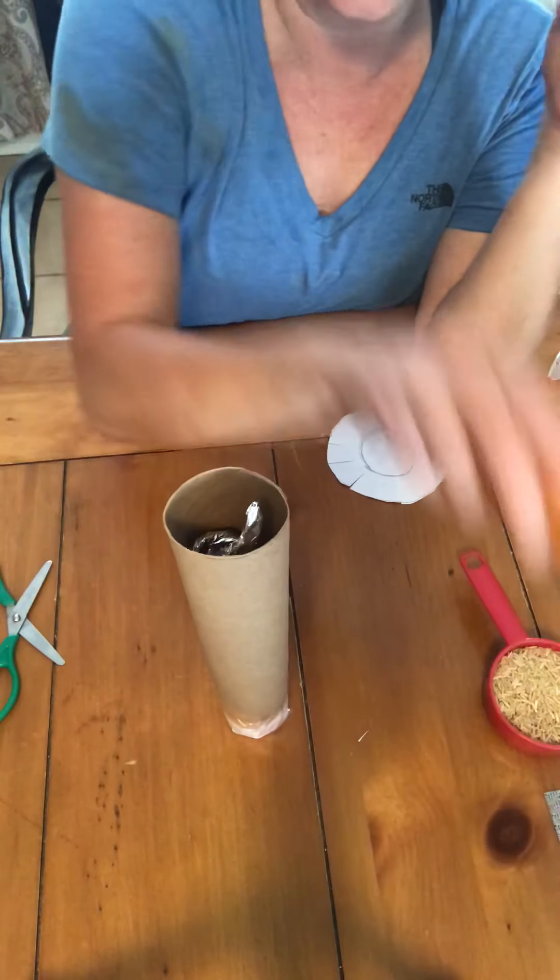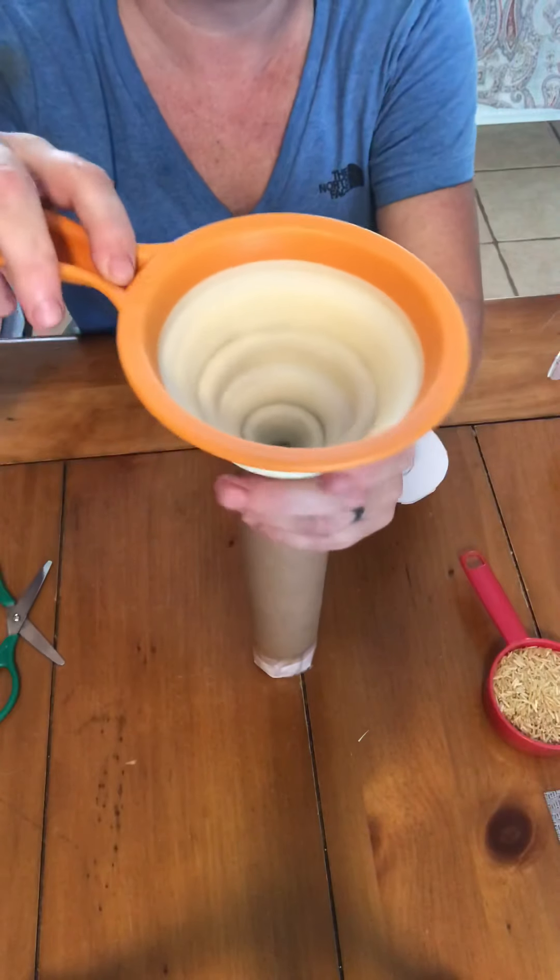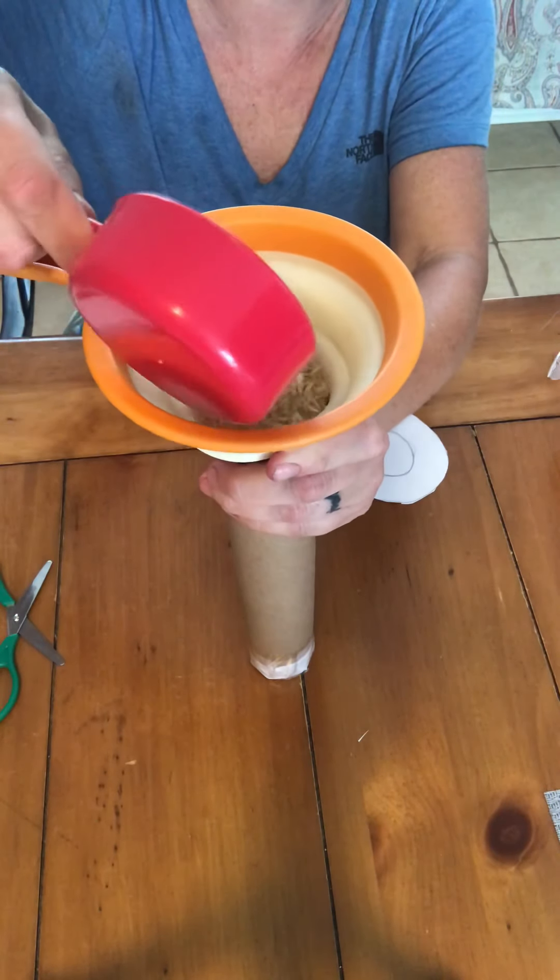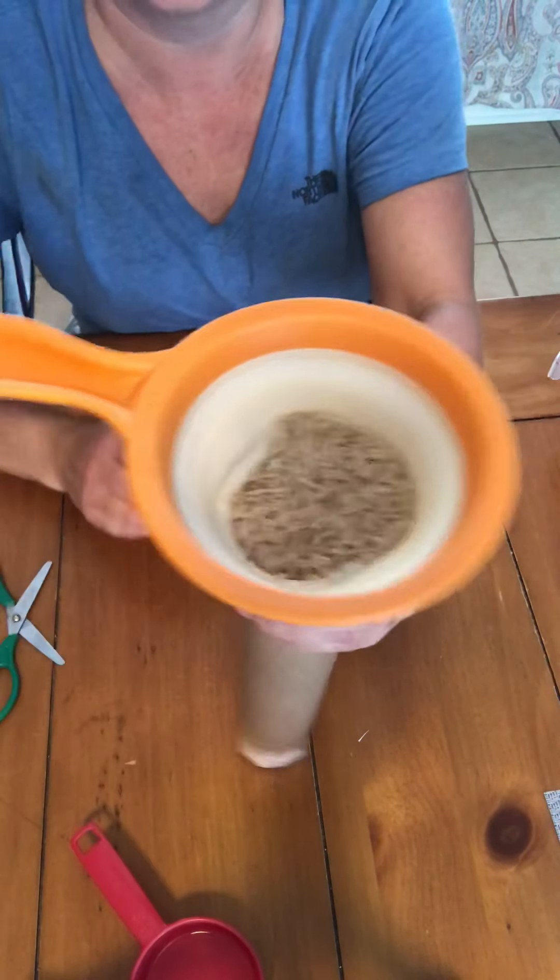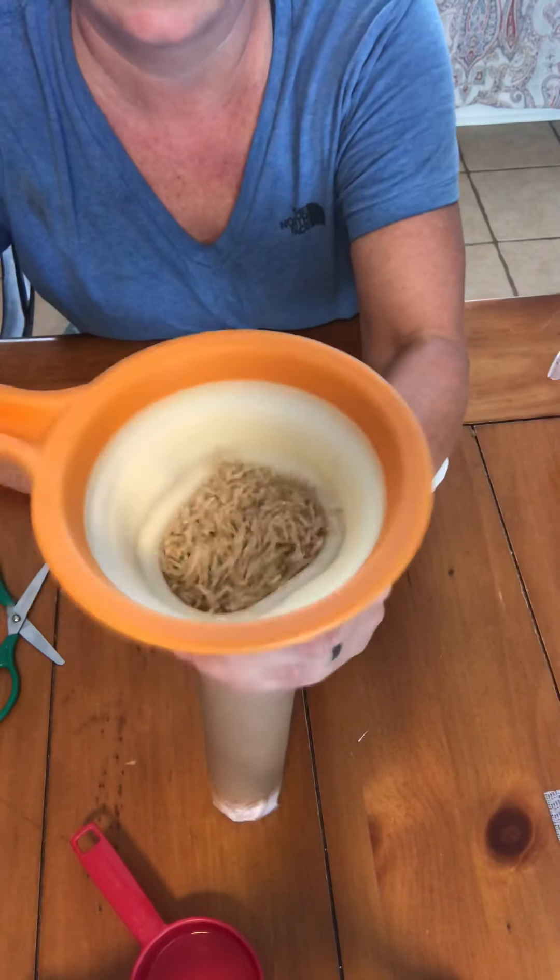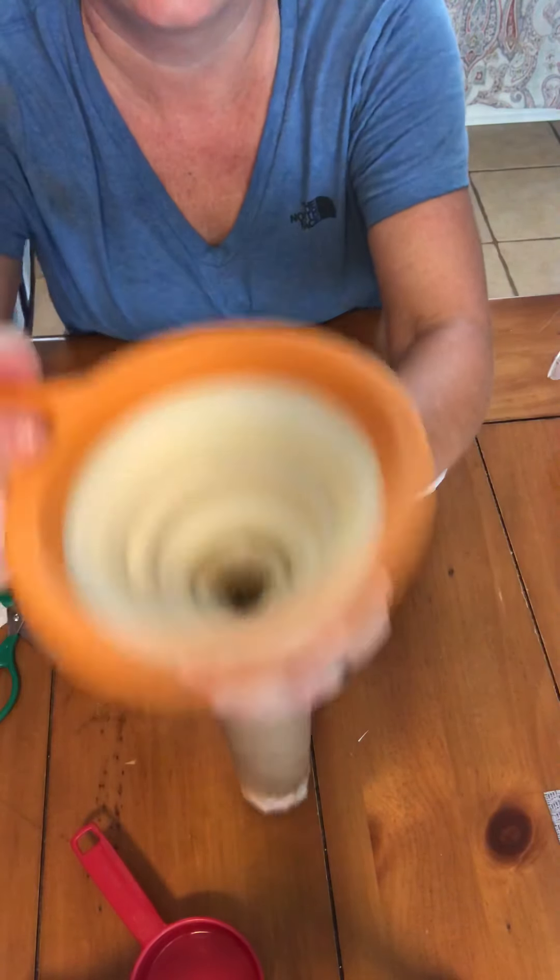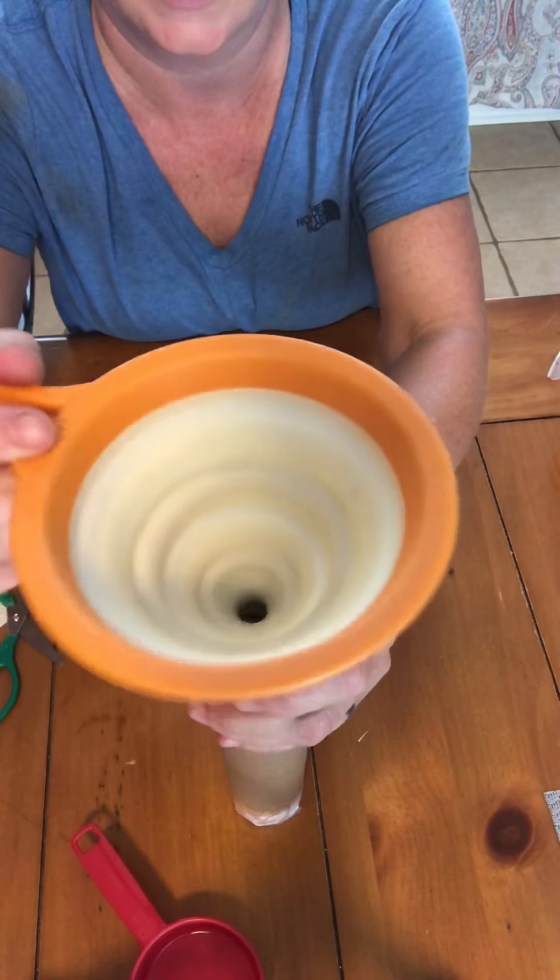Now if you have a funnel, use a funnel like this, pour your rice in the funnel and let it go down in. Alright, so now all the rice is down inside.